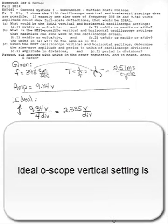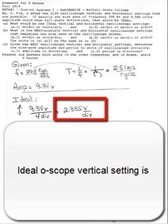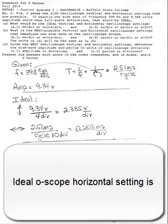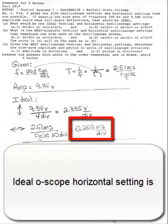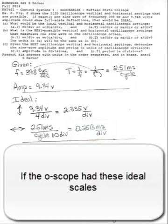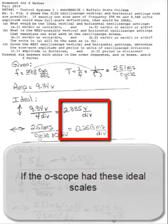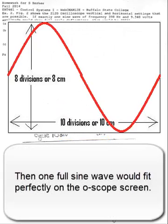Ideal oscilloscope vertical setting is 9.34 volts divided by 4 divisions. That gives 2.335 volts per division. The ideal oscilloscope horizontal setting is 2.51 milliseconds divided by 10 divisions. That's 0.2513 milliseconds per division. If the oscilloscope had these ideal scales, then one full sine wave would fit perfectly on the oscilloscope.